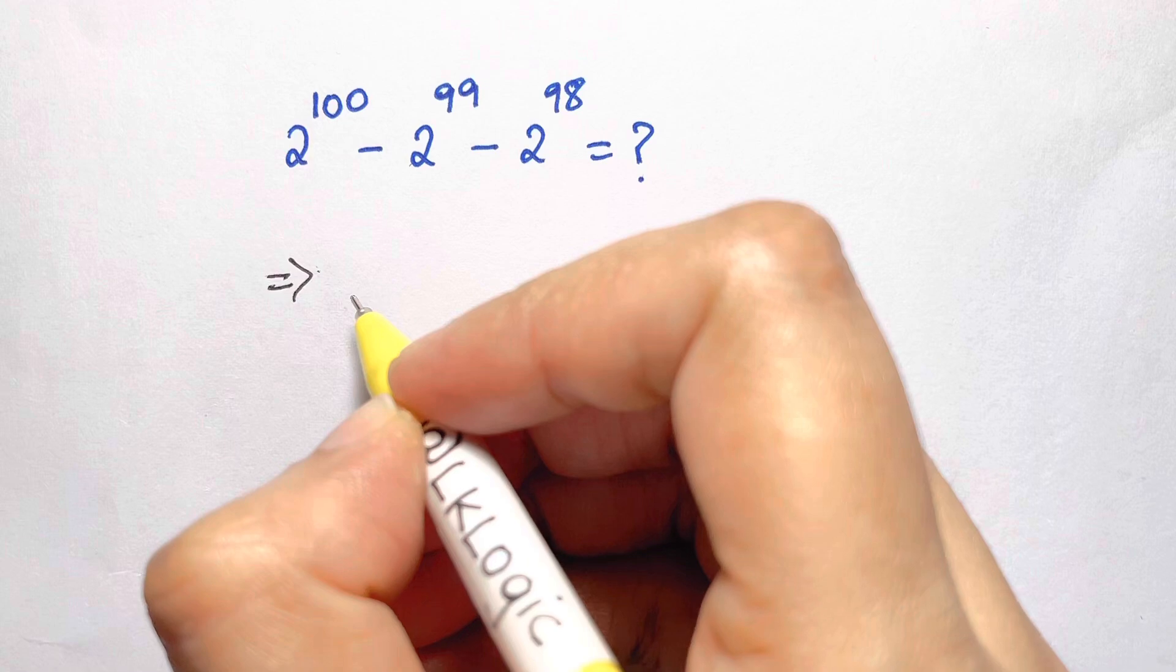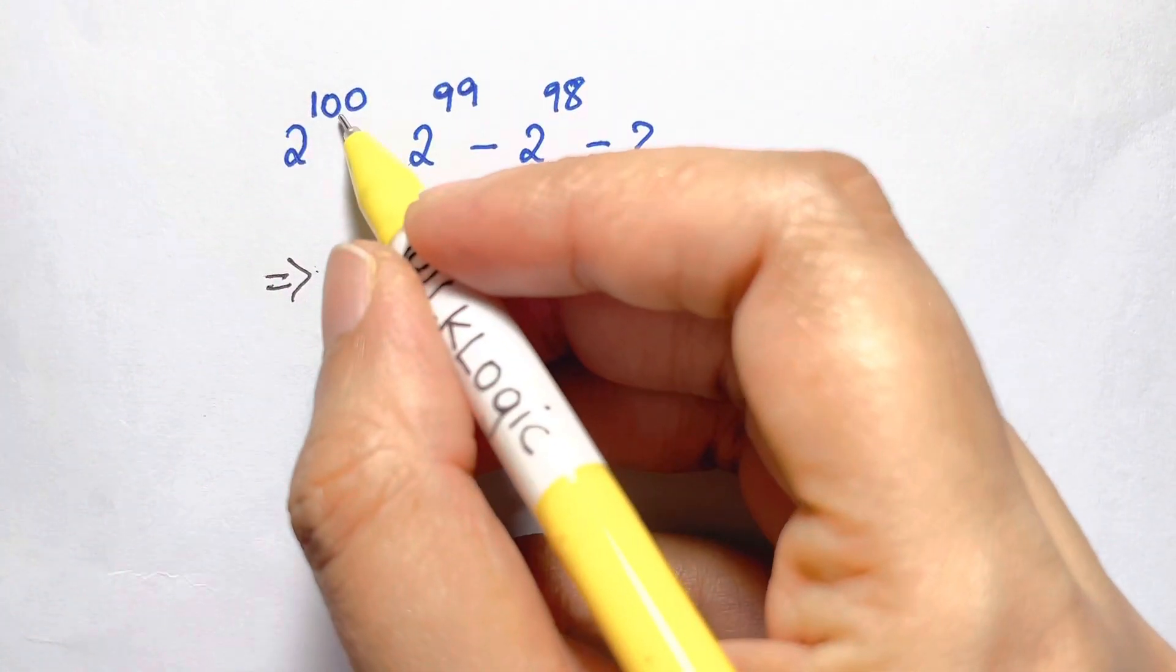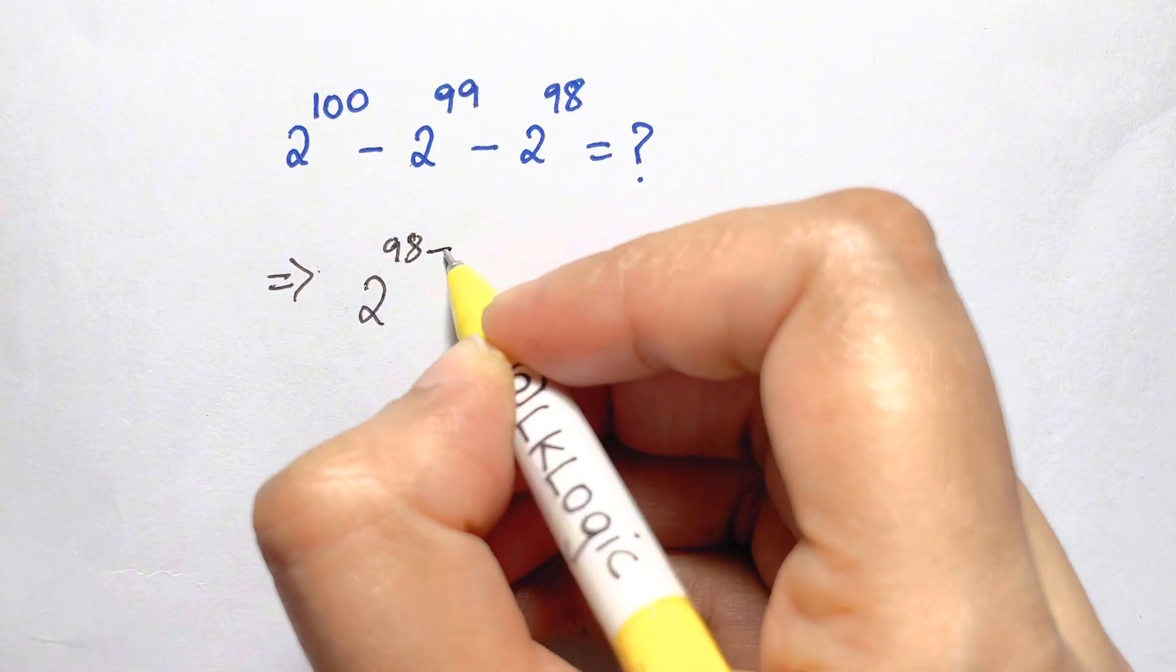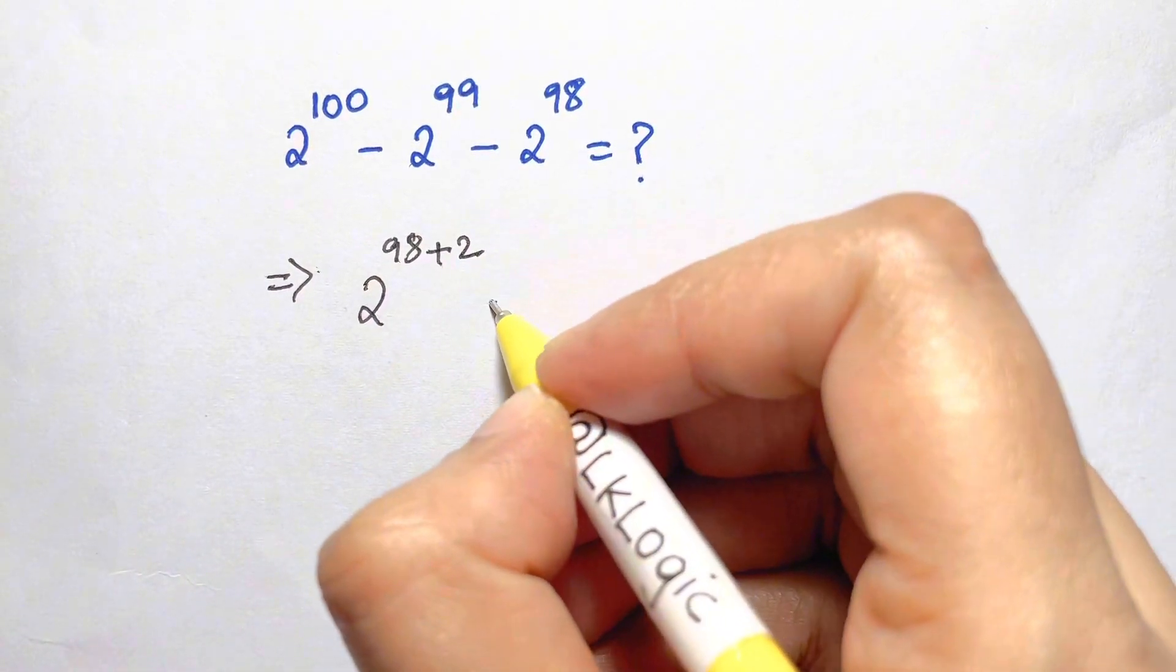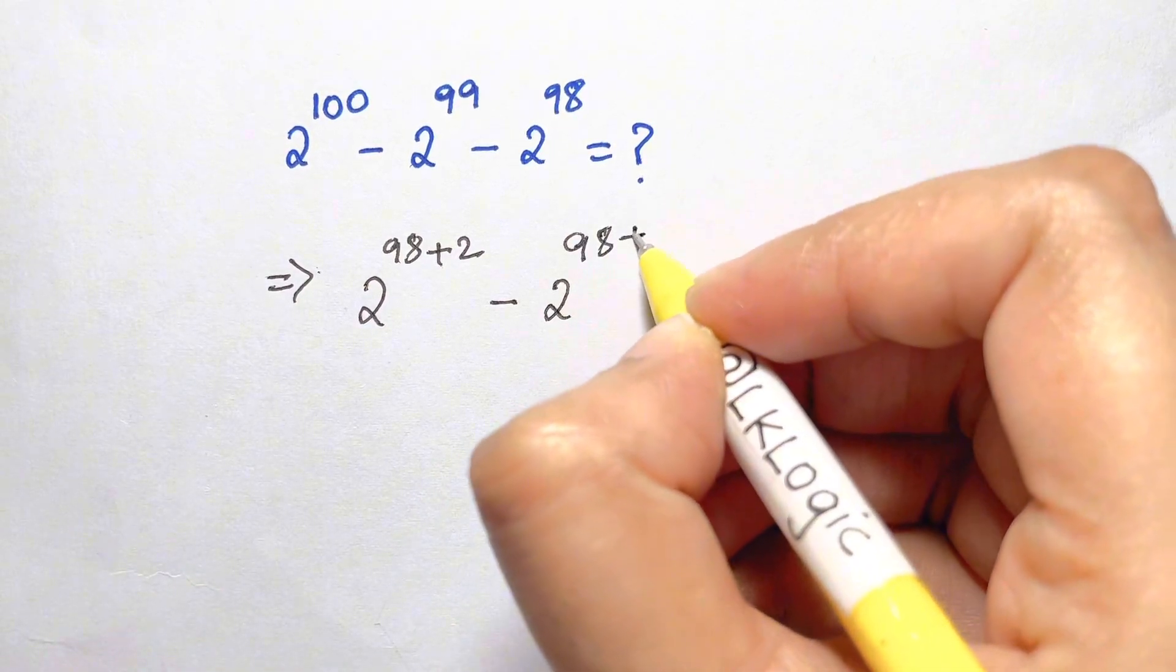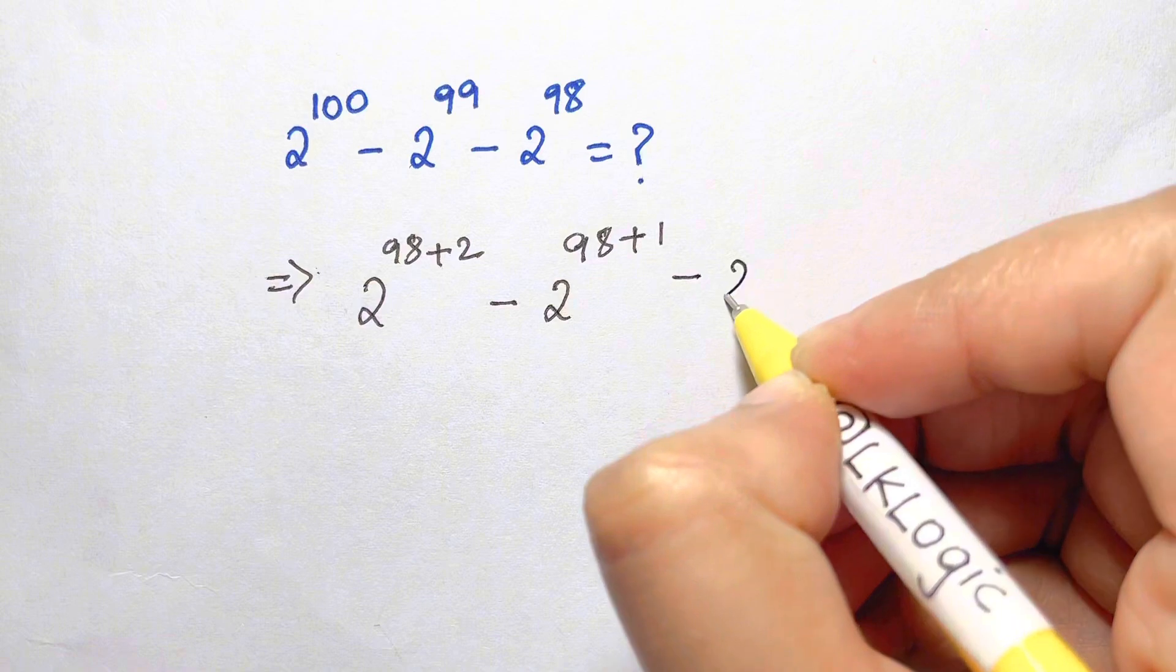We are just going to split 100 in terms of 98, like 2 to the power of 98 plus 2 is 100. And 2 to the power of 99 is what? 98 plus 1 is 99. And let's leave it like that, 2 to the power of 98.